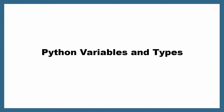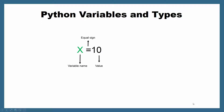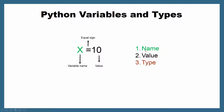In this video, I'm going to explain Python variables and types. In Python, if you want to define a variable, it's really very easy. You need the variable name, equal sign, and the value of the variable. Once you do this, Python will define three things: the variable name, the value of the variable, and the type of the variable.